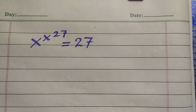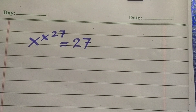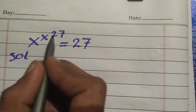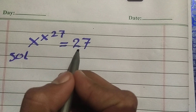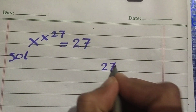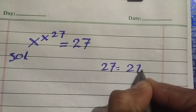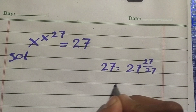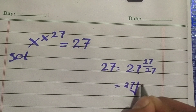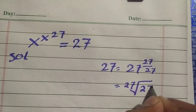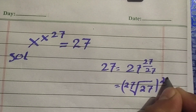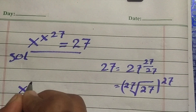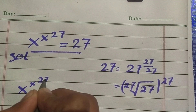Hello everyone, in this video we are going to solve this interesting math equation. We have x^(x^27) = 27. We can write 27 as 27^(27/27), which equals the 27th root of 27, raised to the power of 27. So this equation becomes x^(x^27) = (27th root of 27)^27.